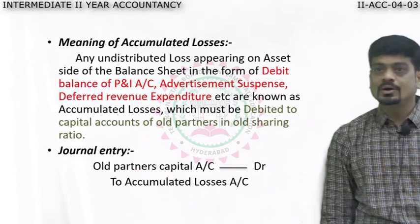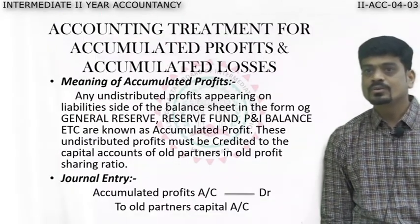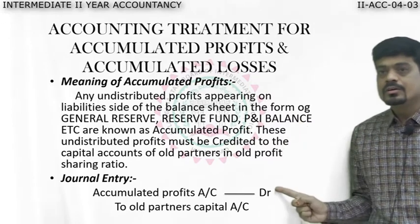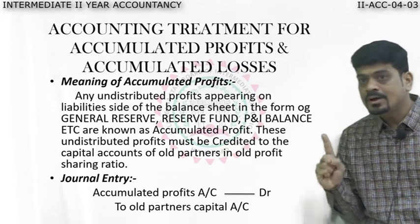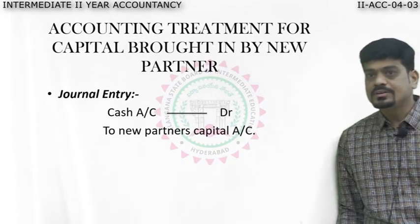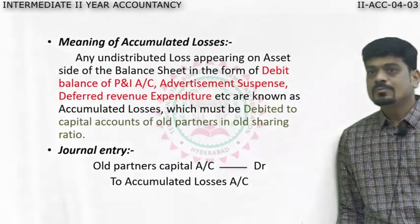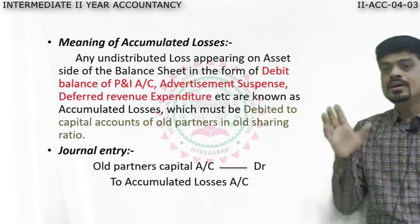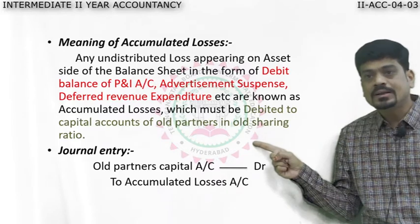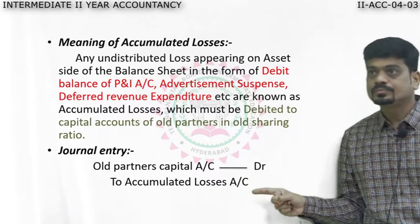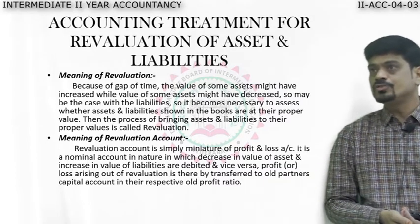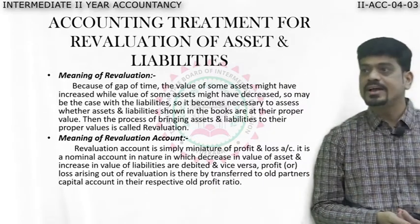To recap: accumulated profit treatment — distribute among old partners in old profit ratio. Capital brought in by new partner — Cash to Capital. Accumulated loss treatment — any accumulated loss appearing on the asset side of the balance sheet must be distributed among old partners in the old ratio. Now comes the most important treatment, which covers about 80% of your solution: revaluation of assets and liabilities.